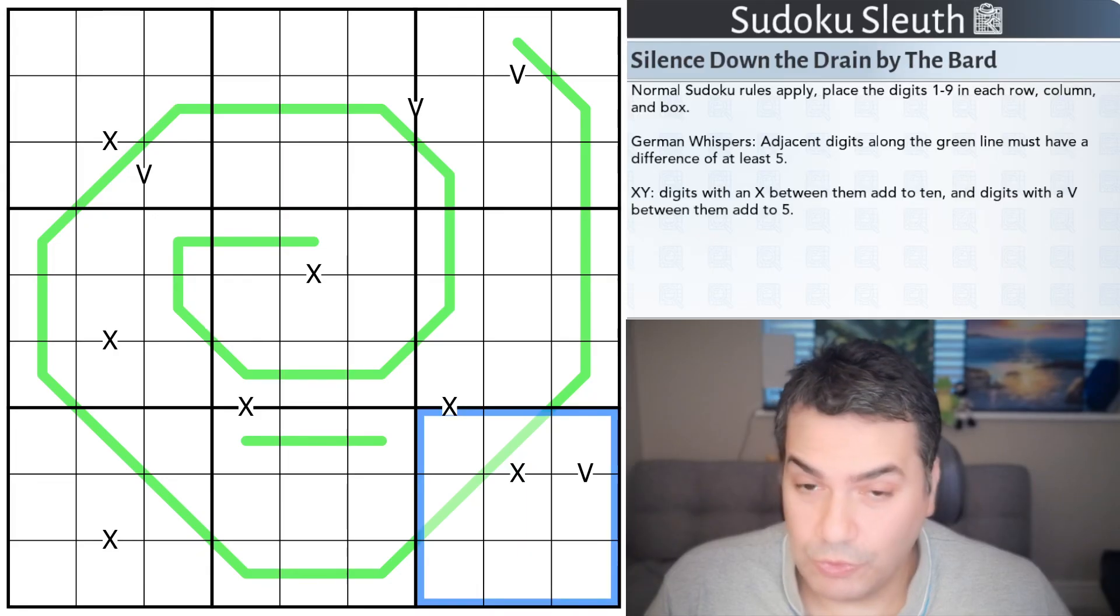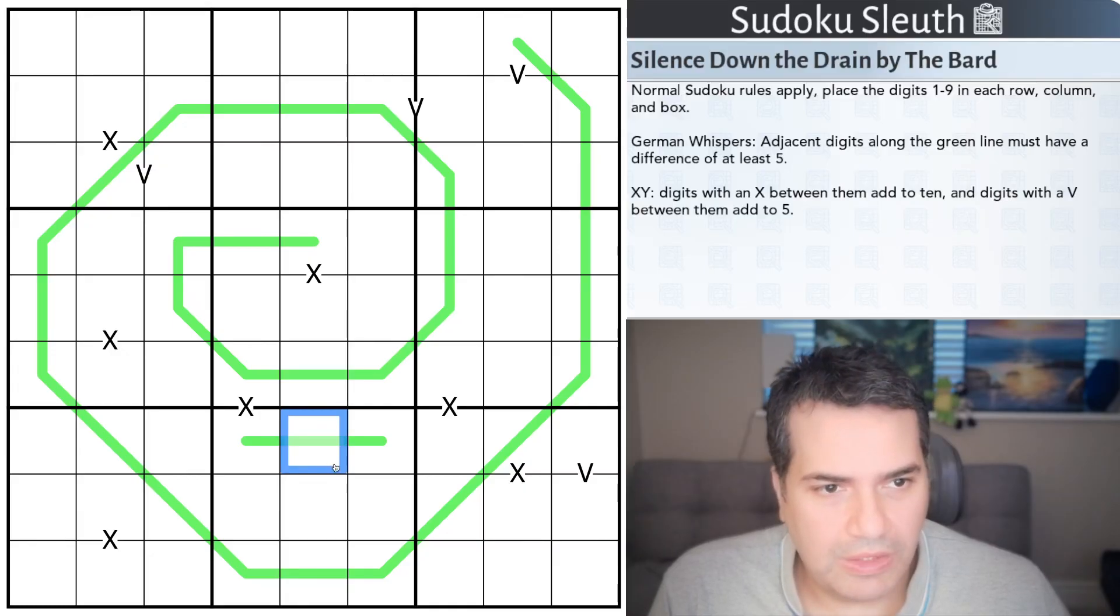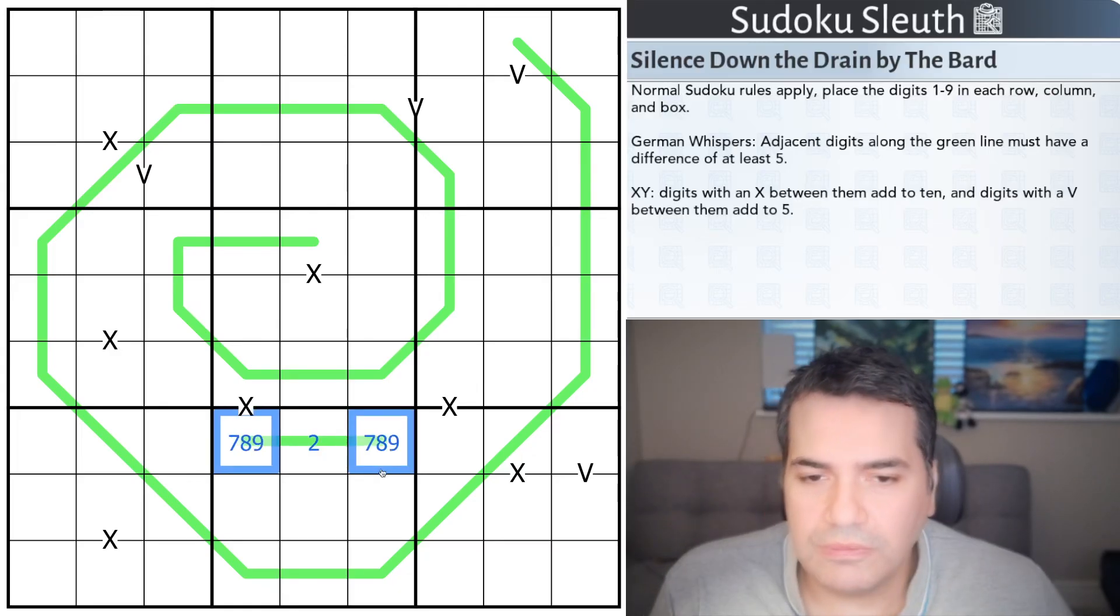German Whispers, of course. That's what it's titled. Adjacent digits along the green line must have a difference of at least five, so if that's a two, these two would have to be seven, eight, or nine, so that they are indeed five more or more away. High digits: six, seven, eight, nine. Low digits: one, two, three, four. And oscillate indefinitely, I guess until the end of the line between them.